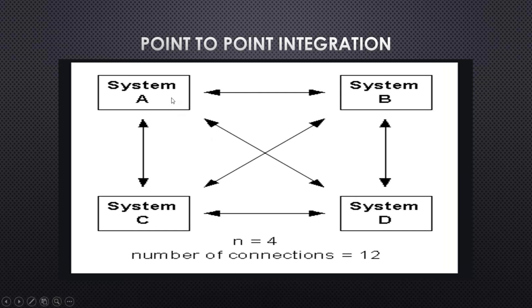The first disadvantage: with four systems, the number of connections made is twelve. Assume in the future system A decides to deploy all their services to another server — the URL will change. Then system C and system B developers must also take care of that change. That means a change in one system in point-to-point integration forces all other systems to do similar changes. This is a major disadvantage.